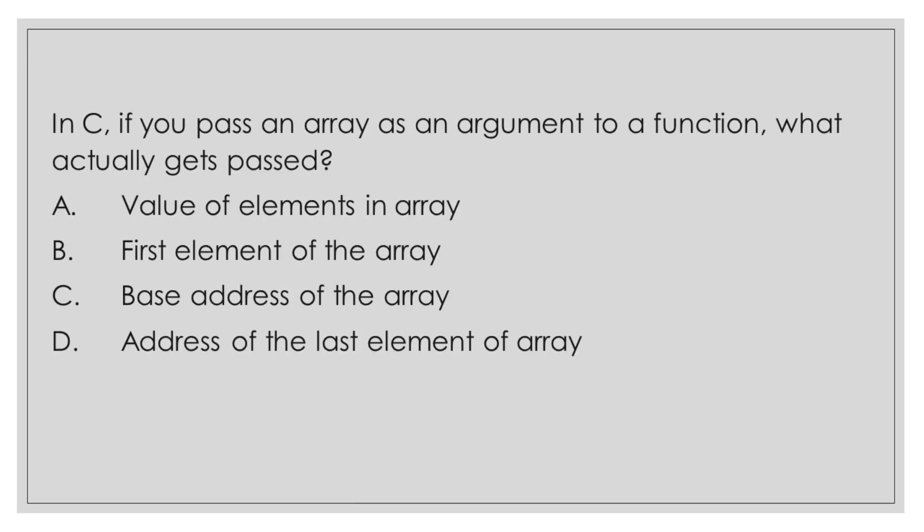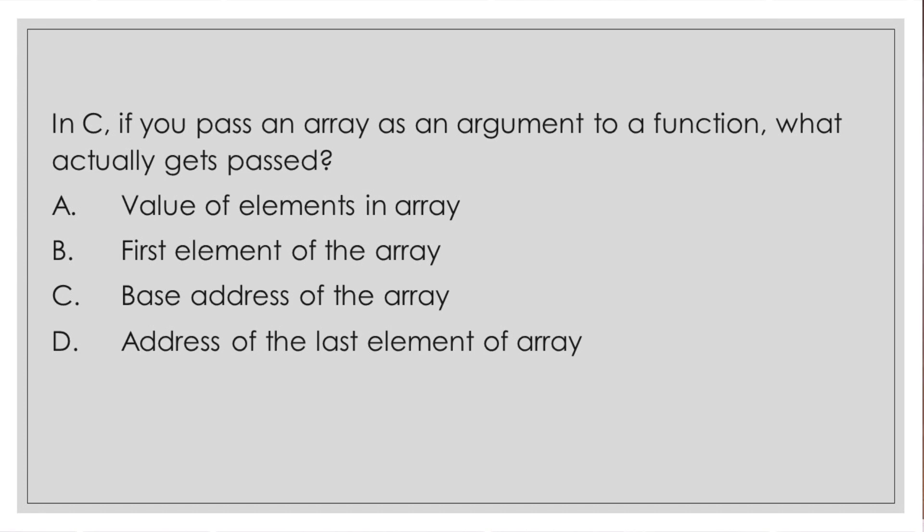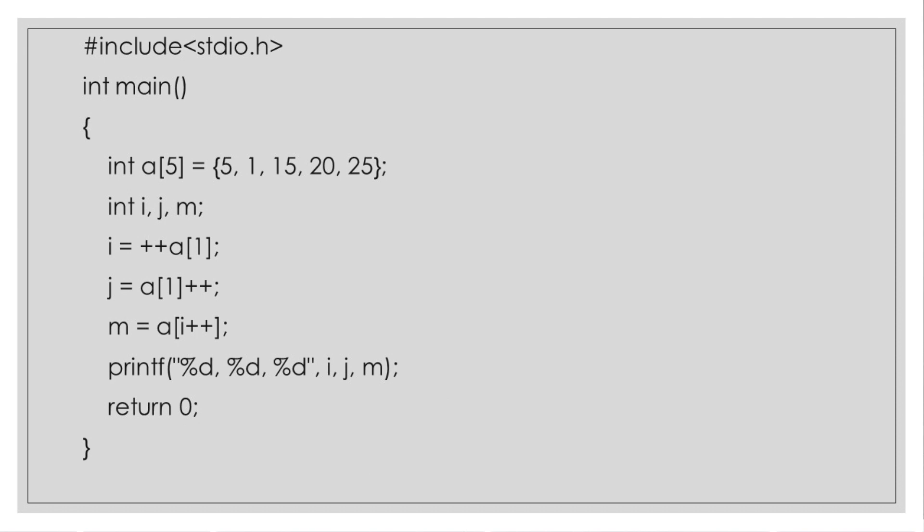Question number 3. In C, if you pass an array as an argument to a function, what gets actually passed? The options are values of elements in the array, first element of the array, base address of the array, or address of the last element of the array. Whenever we are passing the array, the address which is passed is the base address. Base address is the starting point of the address. So that gets passed and we can pass an array as a function argument if we are passing the base address. The complete array is passed in the function.